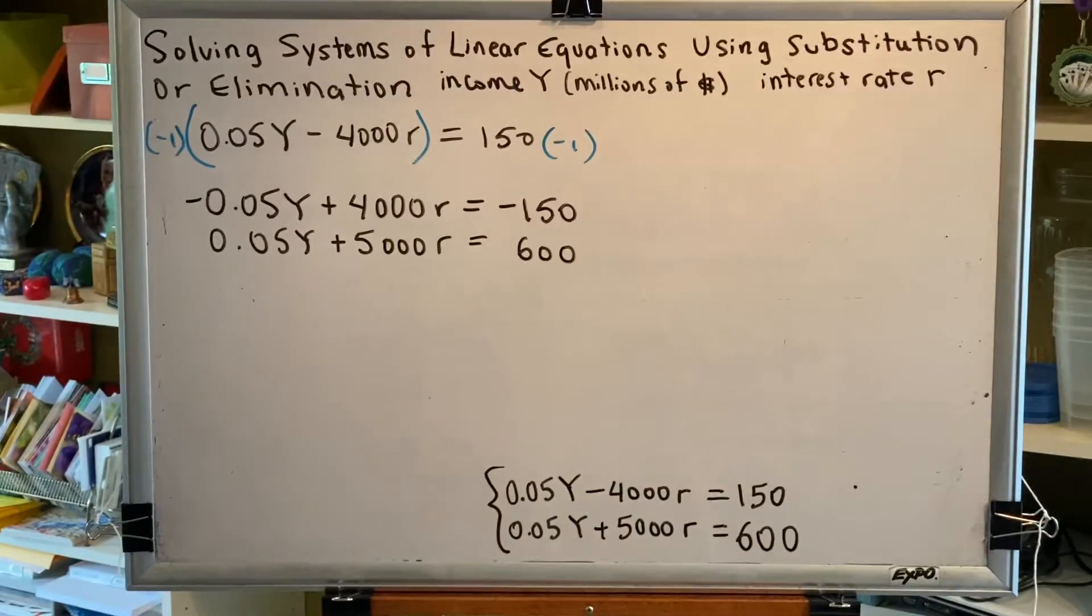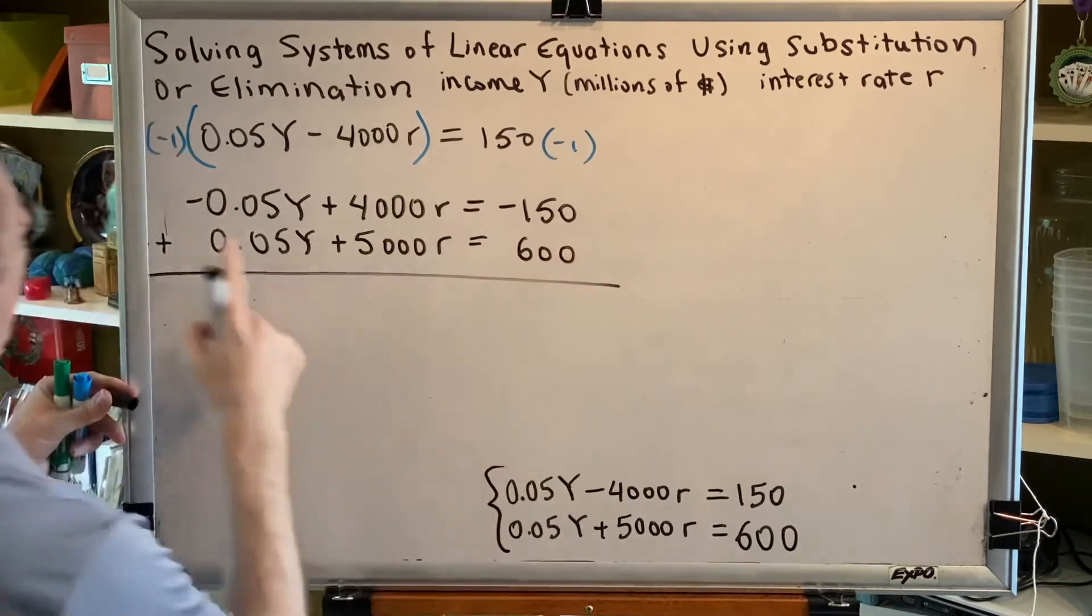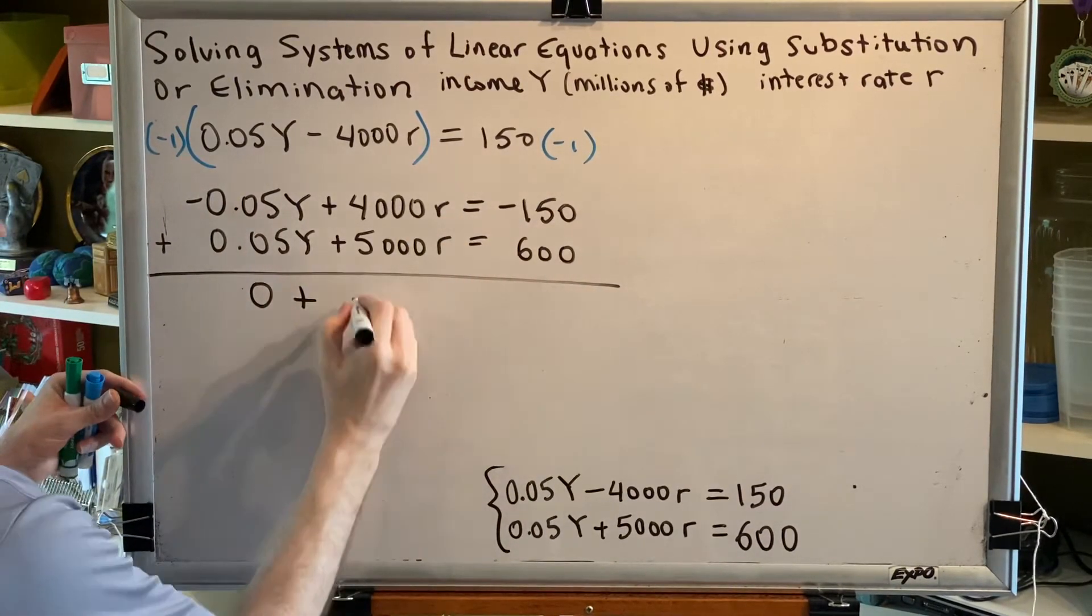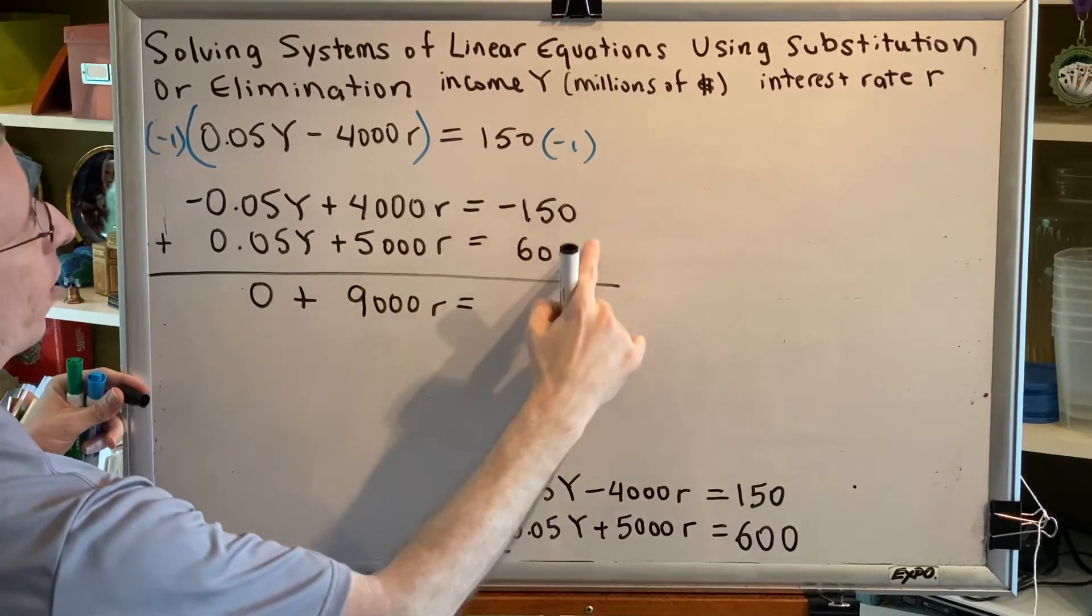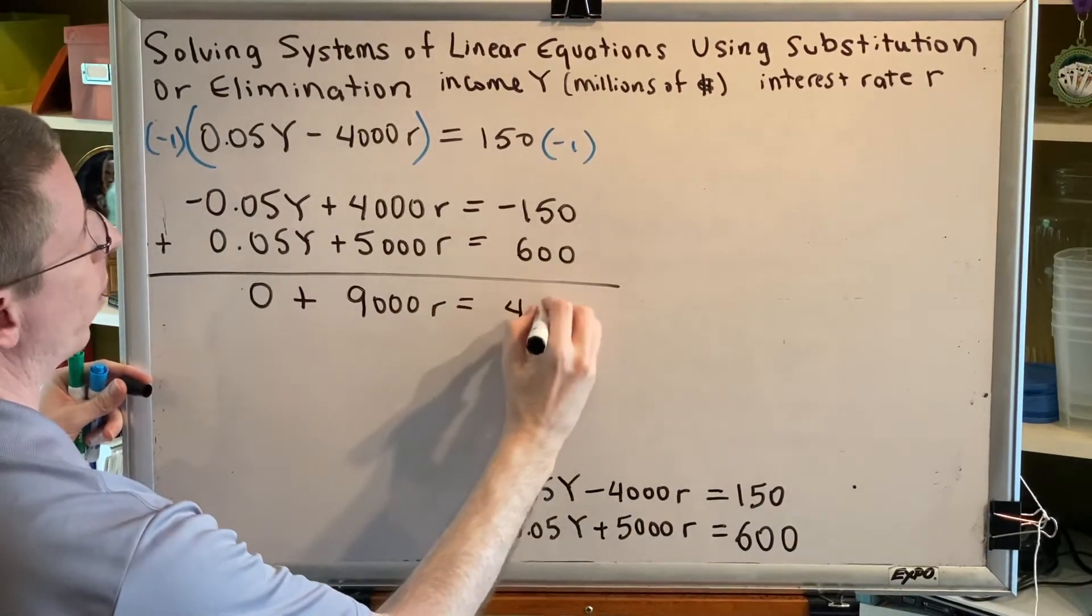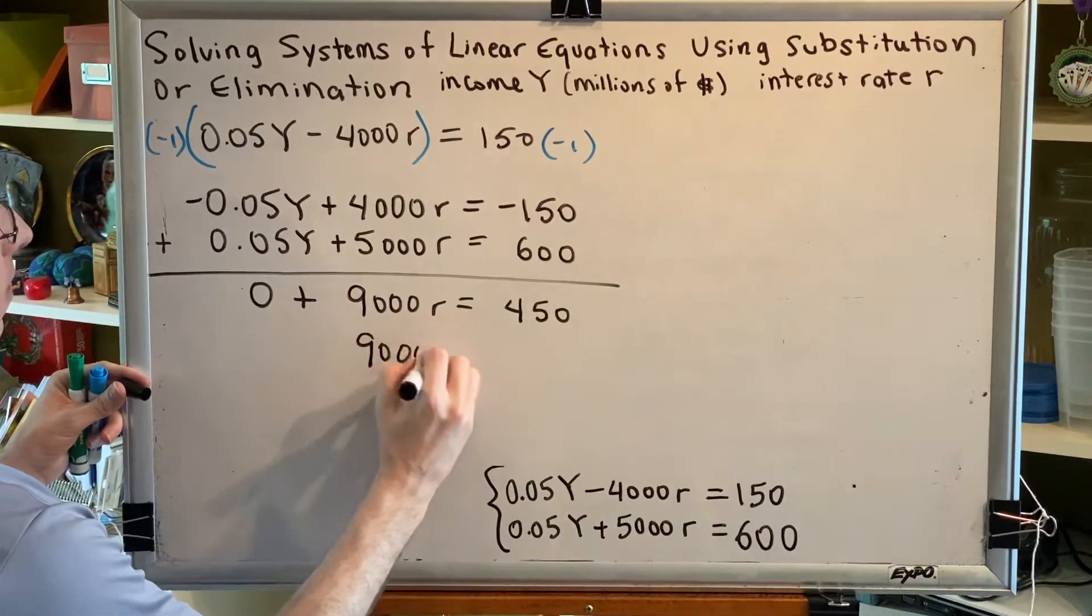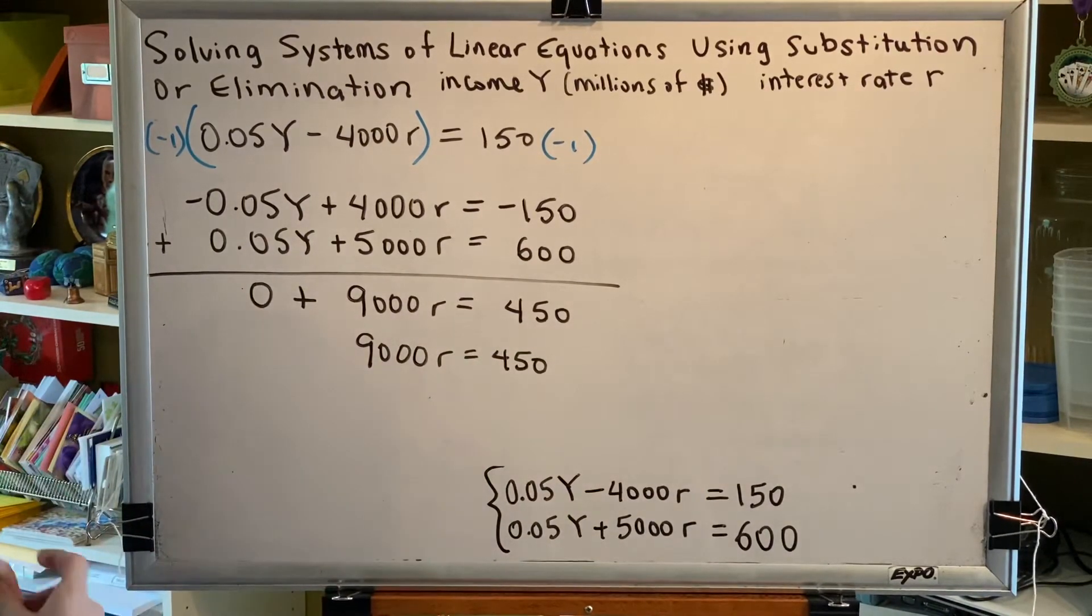All right, so now that we've created our opposites, we are ready to add our two equations together. Opposites add to make 0. 4000R plus 5000R makes 9000R. And negative 150 plus 600 makes 450. Anything plus 0 is itself. So then we have 9000R equals 450. Divide by 9000 on both sides.